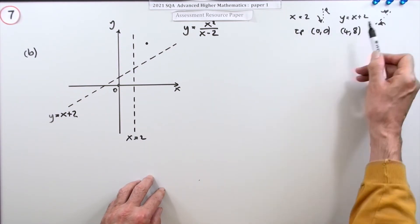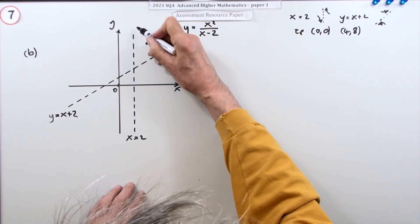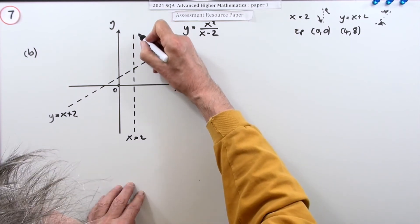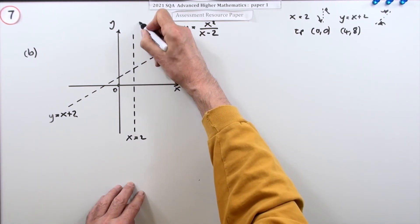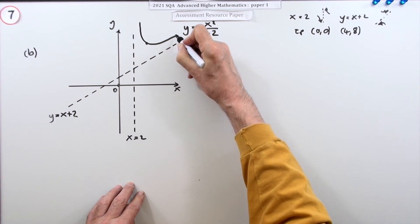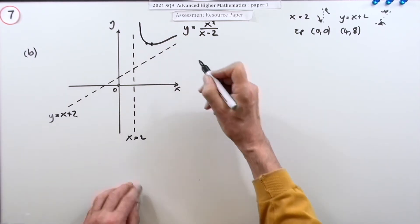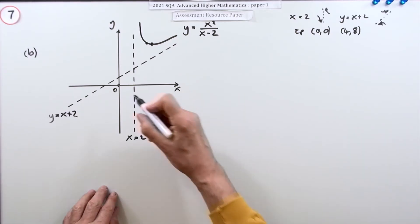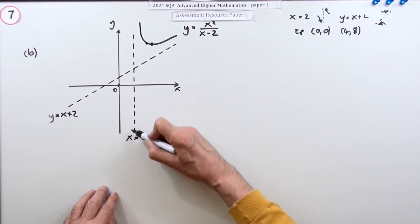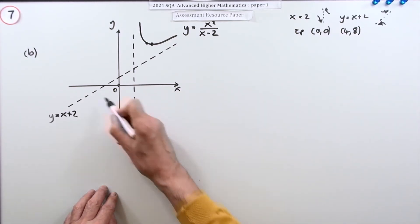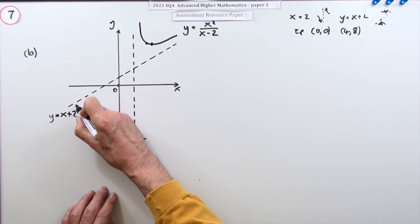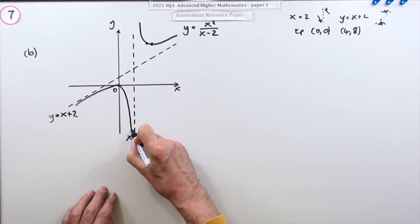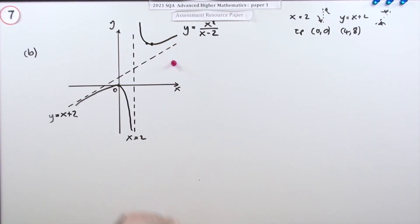Make the curve go through those points and approach the asymptotes in the way previously decided. It comes from up here, passes through (4, 8), then heads off above the oblique asymptote. On the other side, the graph comes down through the origin and approaches the vertical asymptote from below. So all of that was just for the one mark.